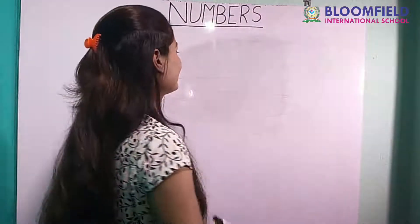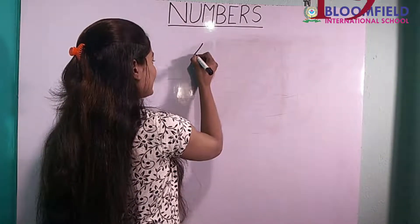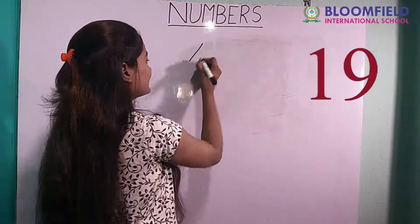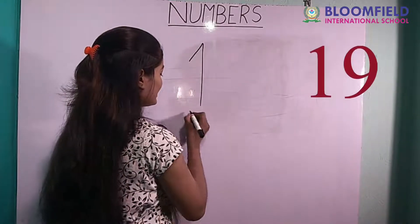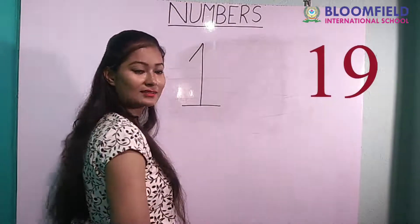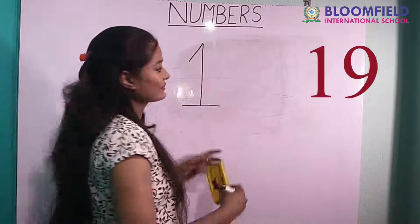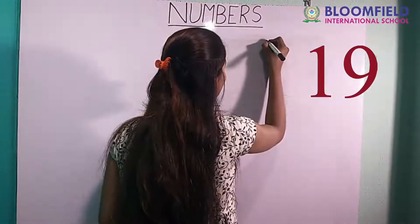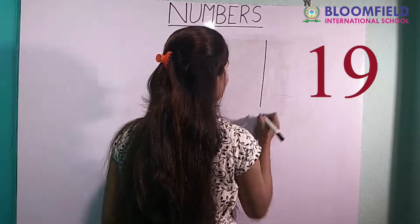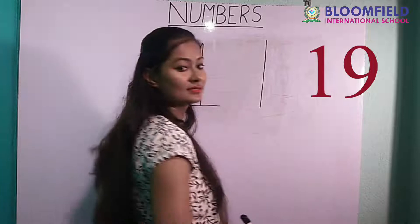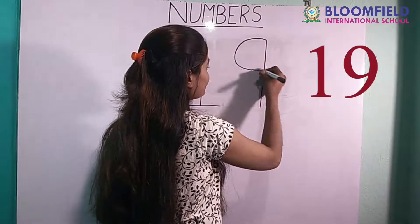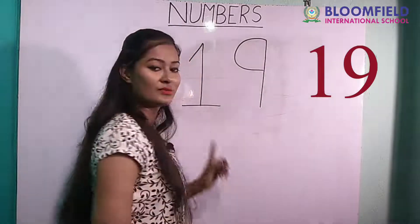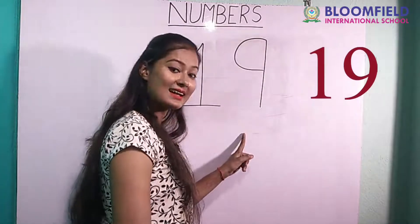So next: slanting line, one more standing line, then small slipping line. One and one standing line, then small curve. One nine. Nineteen.